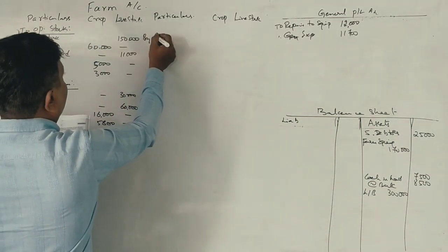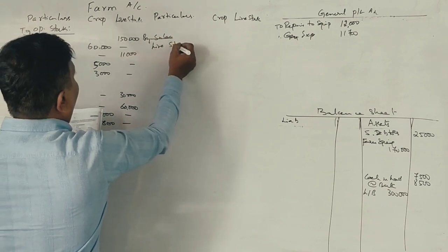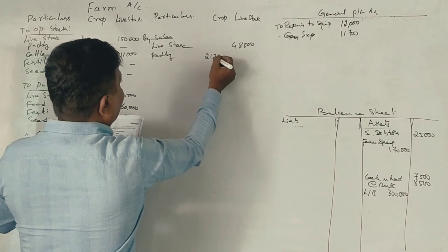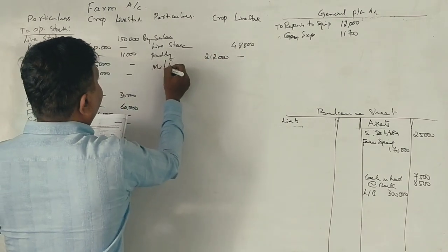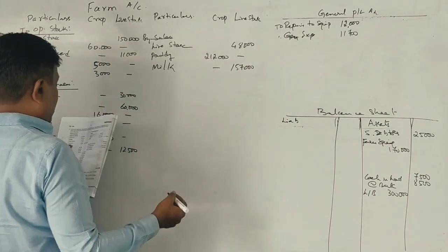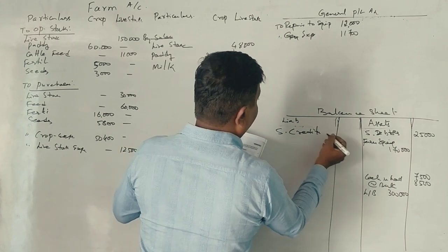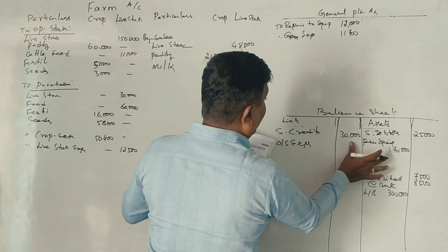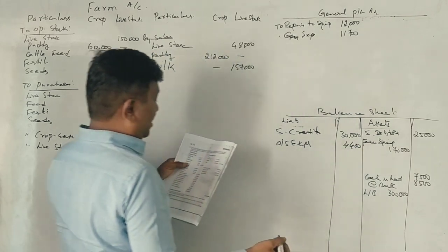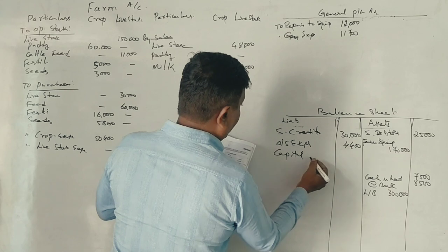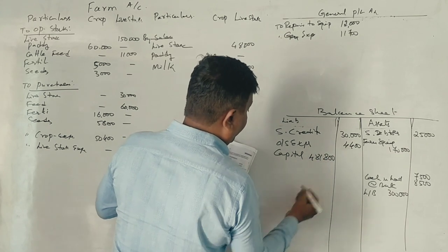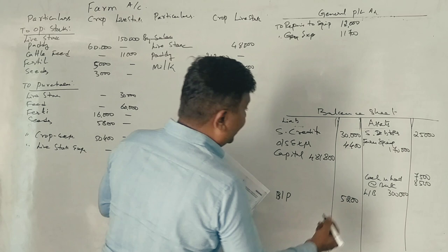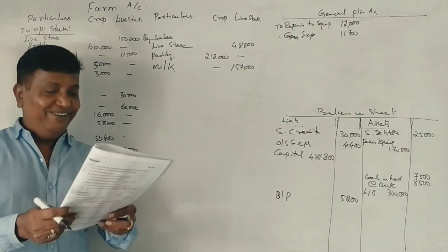Sales — livestock: 48,000. Paddy: 4,500. Milk: 1,57,000. Credit card: 30,000. Outstanding expenses: 4,400. Capital: 41,800. Bills payable: 5,200.